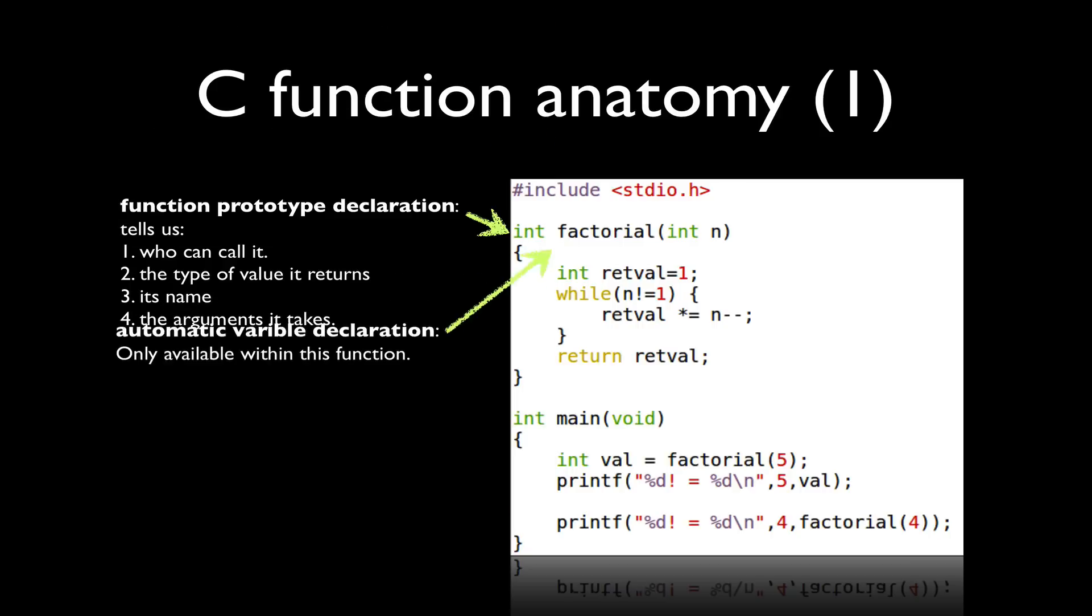Now my functions can also define what we call automatic variables. These are variables declared within the scope of the function, and the variable itself is only available within the function. So as we return from the function, those variables are no longer available.